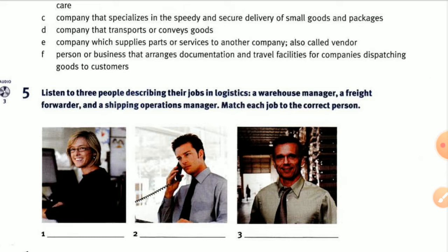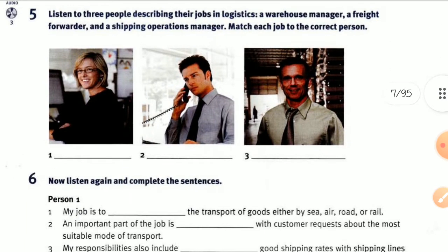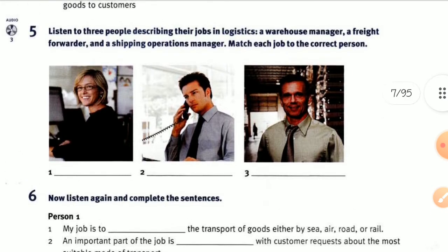Definition E: a company which supplies parts or services to another company, also called a vendor. Definition F: a person or business that arranges documentary and travel facilities for companies dispatching goods to customers. Number five: listen to three people describing their jobs in logistics — a warehouse manager, a freight forwarder, and a shipping operations manager. Match each description to the correct person.